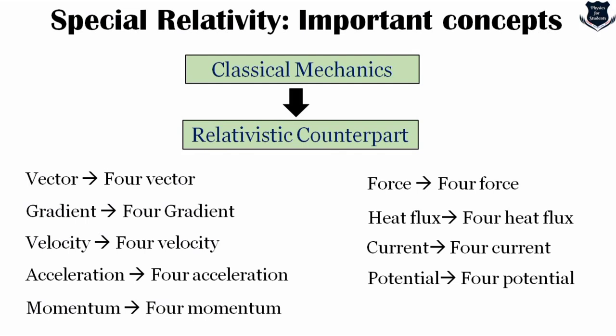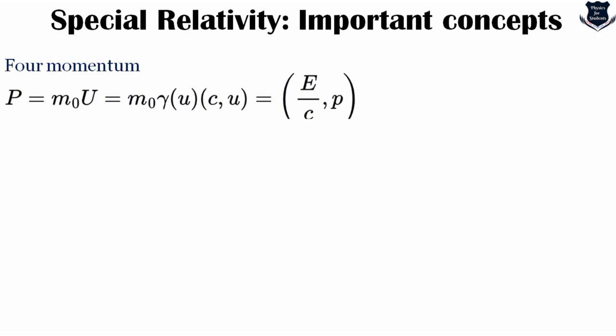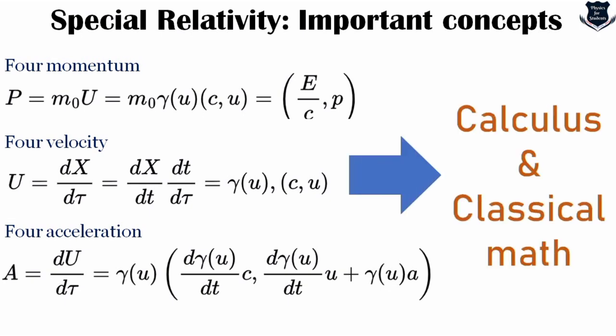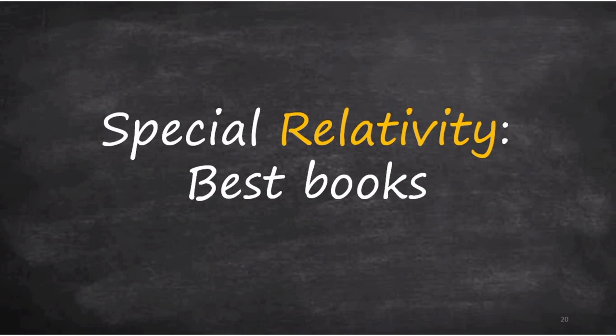The reason we talk about four-vectors is that without them the mathematics of special relativity would be incomplete. We also have four-frequency and extensions into relativistic quantum mechanics. The key point is that four-momentum, four-velocity, and four-acceleration all basically contain calculus and classical mathematics — that is why I said from the beginning we need a very strong understanding of calculus and classical math. Apart from calculus and classical math, there is one more very important thing we need to cover.